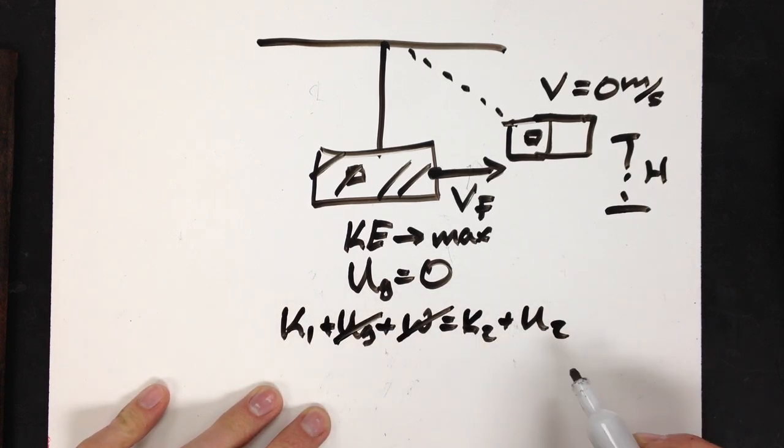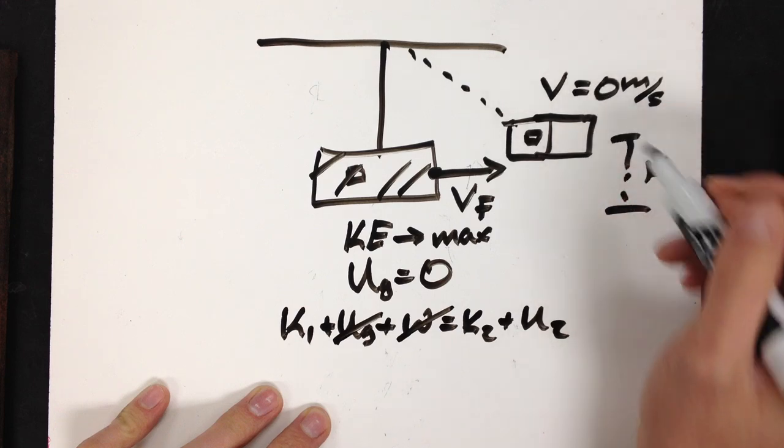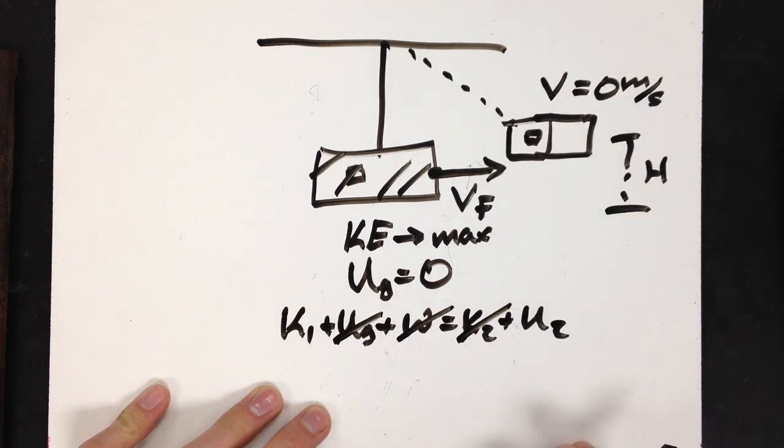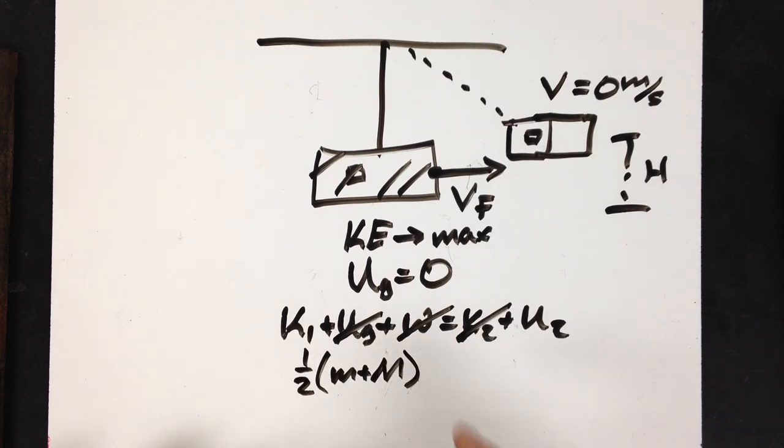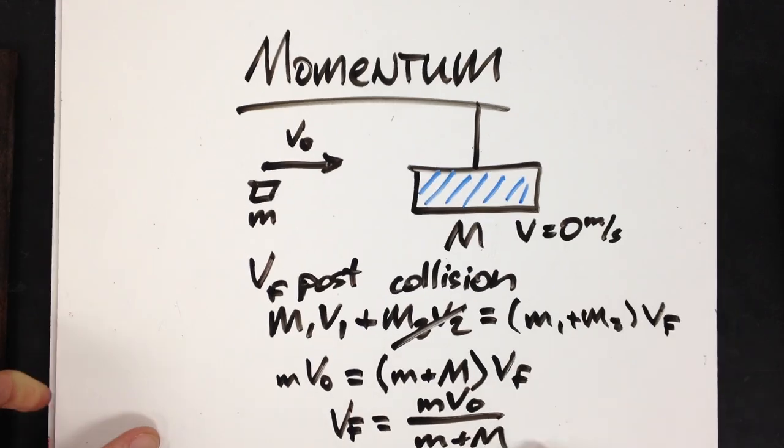All initial kinetic energy. And, at this point right here, I have no kinetic energy. So, it's all potential due to gravity. Well, my kinetic energy is going to be one half my mass, which is the bullet block system, times my velocity. Well, my velocity was that right there.